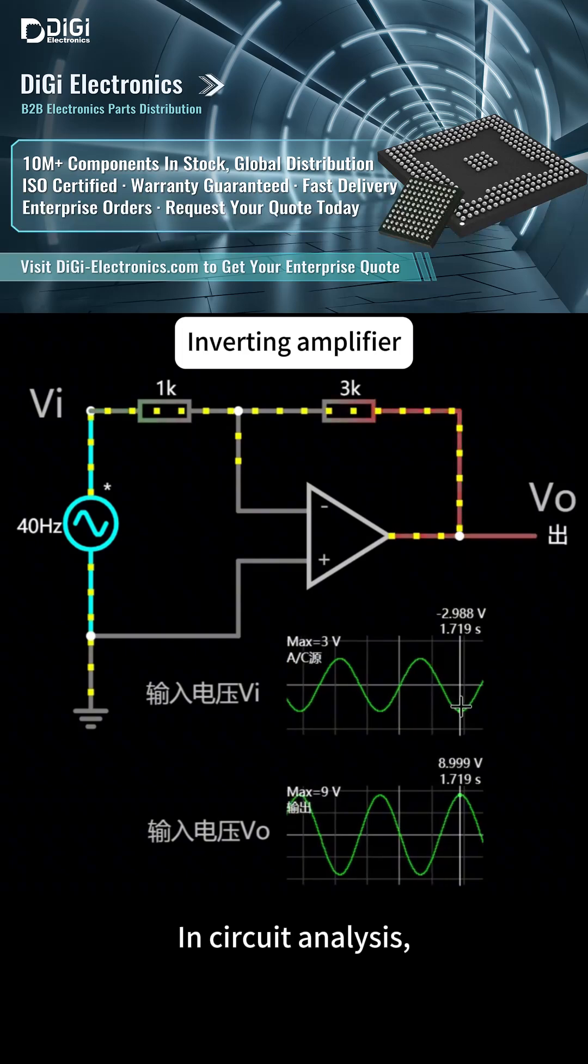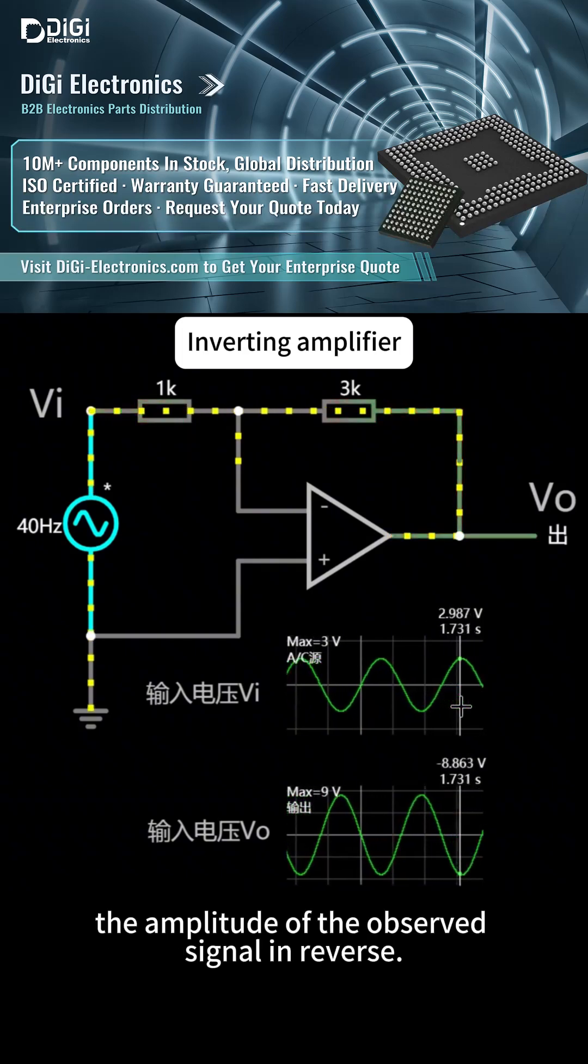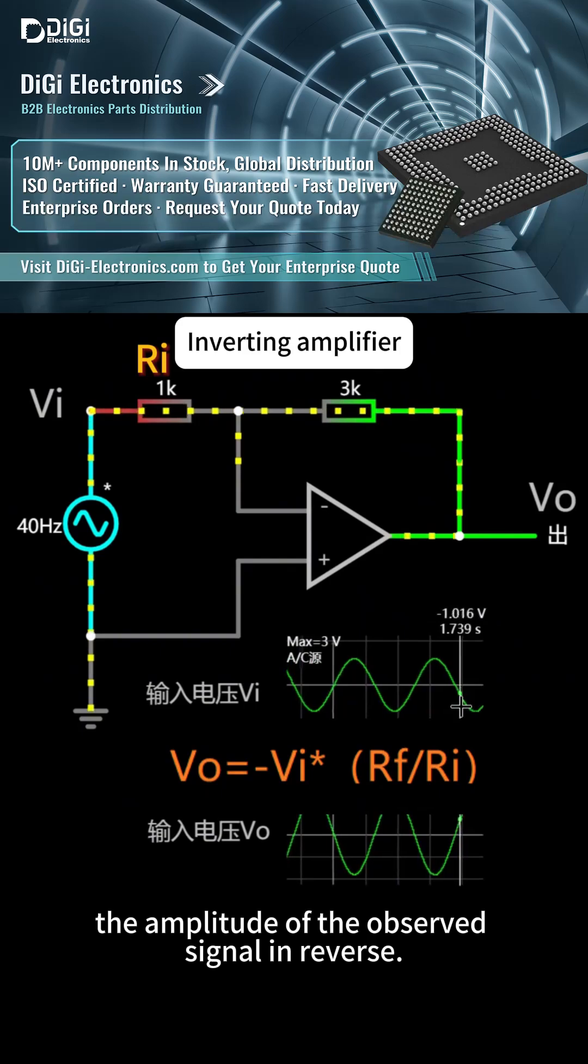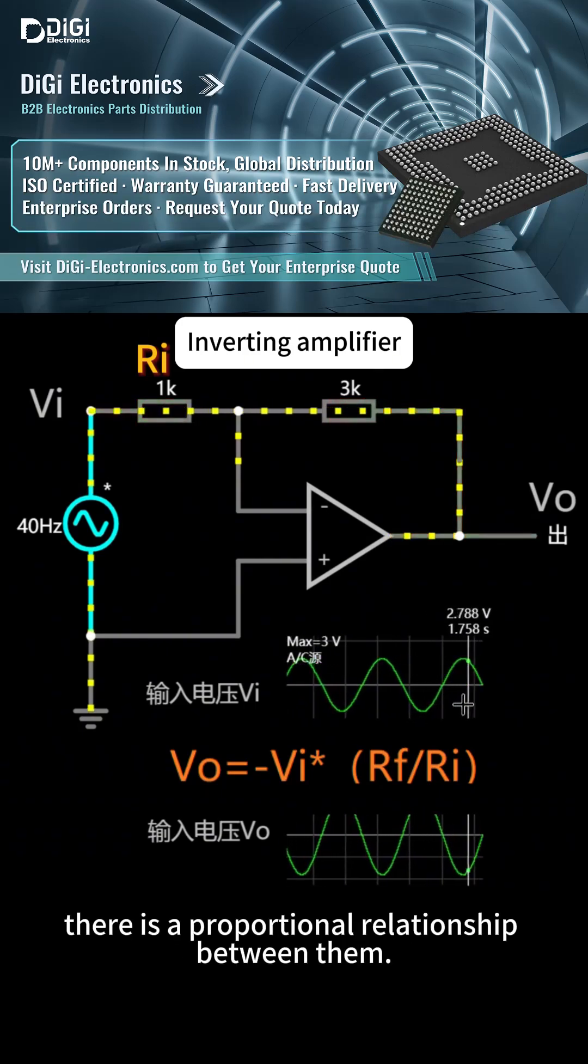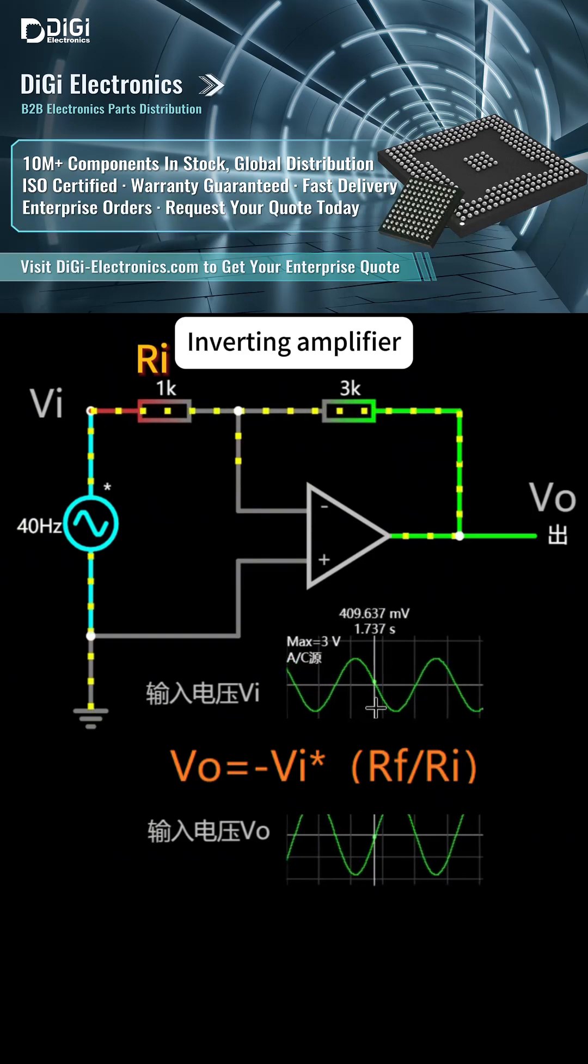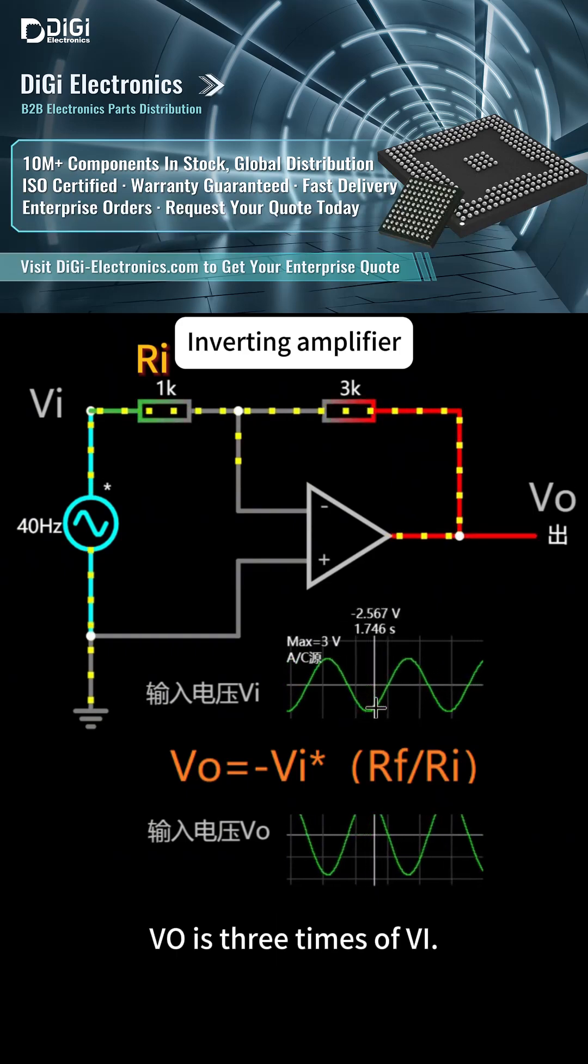In circuit analysis, the output and input have the amplitude of the observed signal in reverse. There is a proportional relationship between them - the output is 3 times Vi,